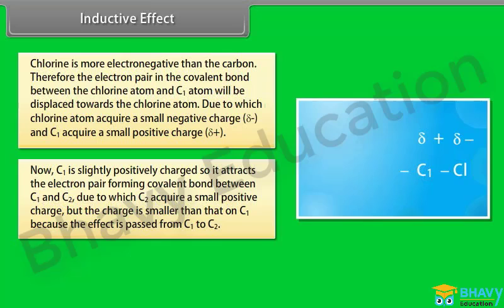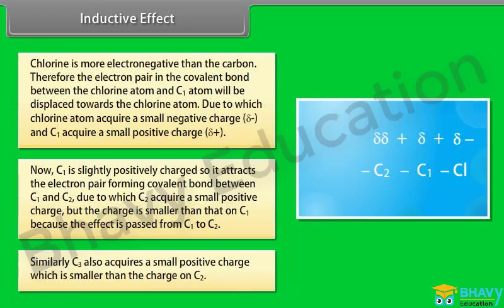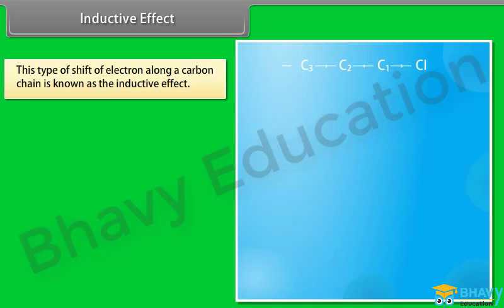Since C1 is slightly positively charged, it attracts the electron pair forming the covalent bond between C1 and C2, due to which C2 acquires a small positive charge — but smaller than that on C1, because the effect diminishes as it passes along the chain. Similarly, C3 acquires a small positive charge, which is smaller than the charge on C2.